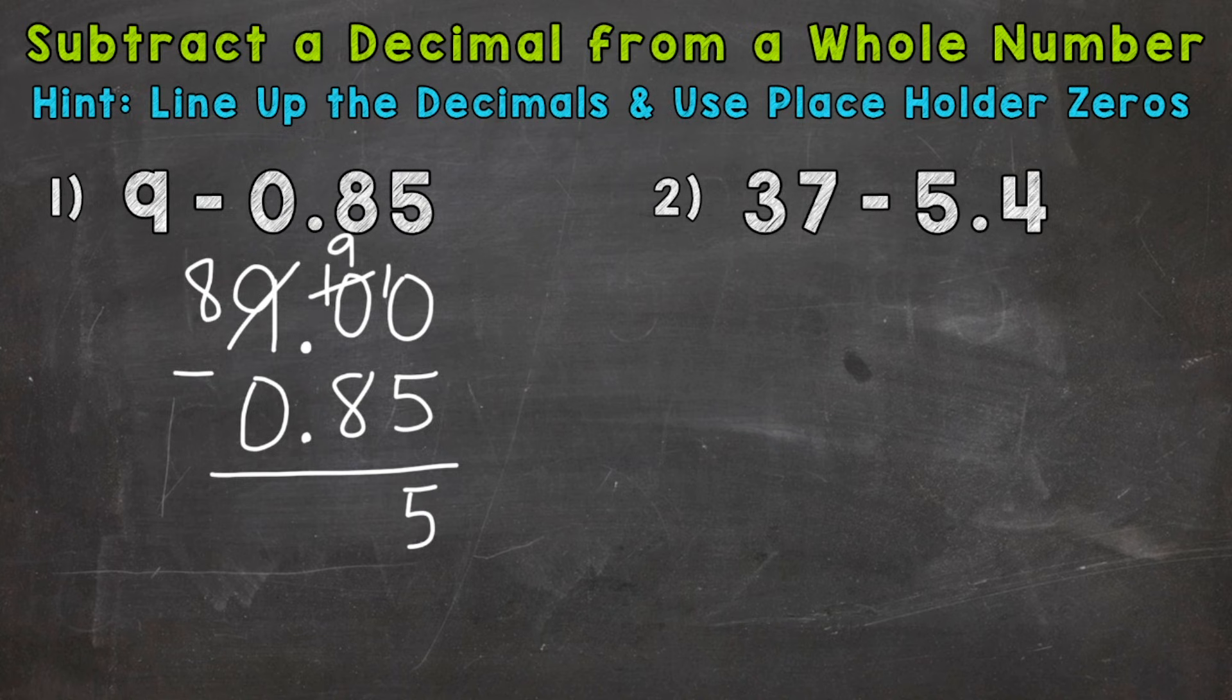So now we have 10 minus five, which is five, nine minus eight, which is one. Bring your decimals straight down. So the decimals lined up throughout the whole problem. Now, eight minus zero is eight. And that's our final answer, eight and fifteen hundredths.